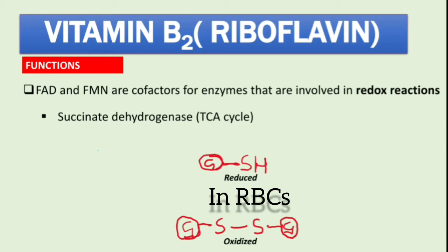Some reactions in our bodies release free radicals, which are dangerous to our DNA, cell membranes, and enzymes. For example, the superoxide anion (O2⁻) is converted to hydrogen peroxide by superoxide dismutase. Hydrogen peroxide can be converted to harmless components by catalase, but here we focus on the glutathione pathway.